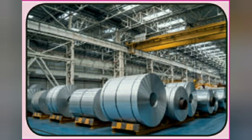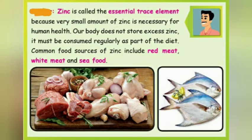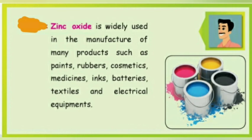Bauxite is also used to manufacture rubber and cosmetics. Zinc is another essential mineral for daily life. A very small amount of zinc is necessary for human health. Our bodies cannot store excess zinc, so we must consume it regularly through diet — foods like red meat, white meat, and seafood. Zinc is also present as zinc oxide, used in products such as paint, rubber, cosmetics, medicines, inks, batteries, textiles, and electrical equipment.